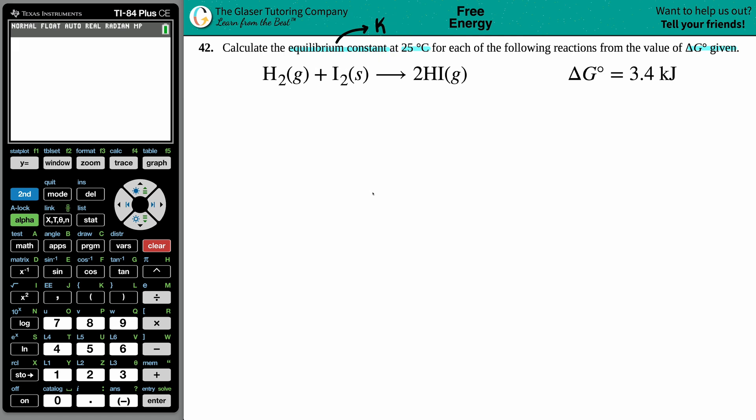Since we're solving for the equilibrium constant, it's best to memorize the formula as K equals the e button on the calculator all raised to the negative delta G° over RT. They didn't give me the R value; that's because it's a constant number.